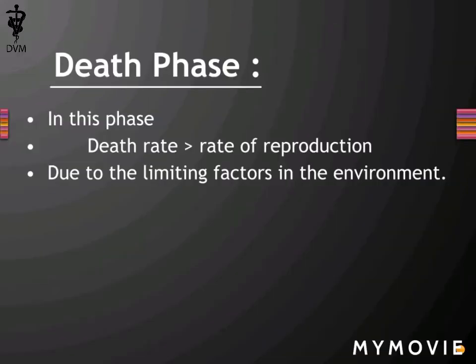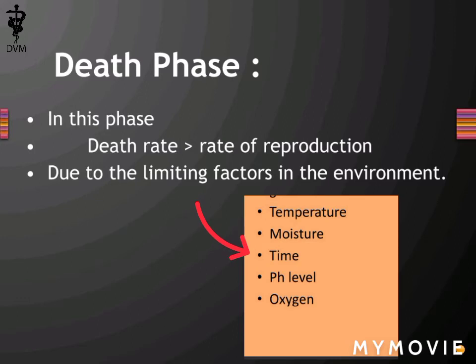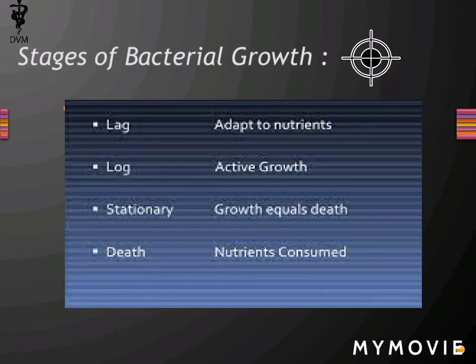In the death phase, the number of cells decreases because the death rate is greater than the rate of reproduction. The main causes are limiting factors in the environment. The graph of the death phase declines as the number of cells decreases.